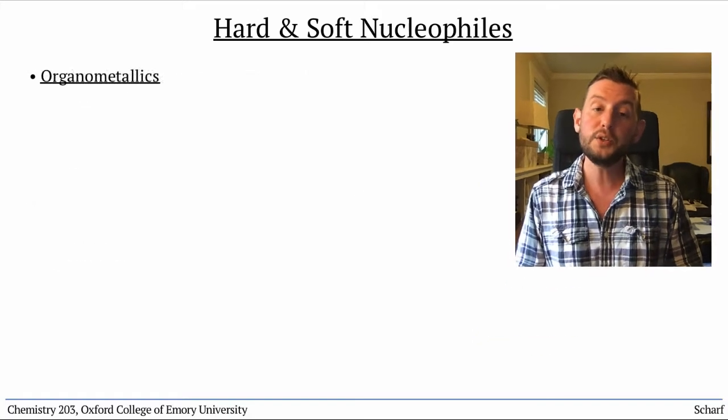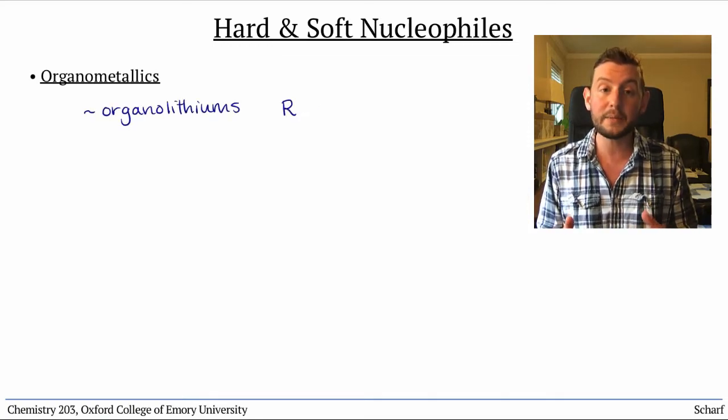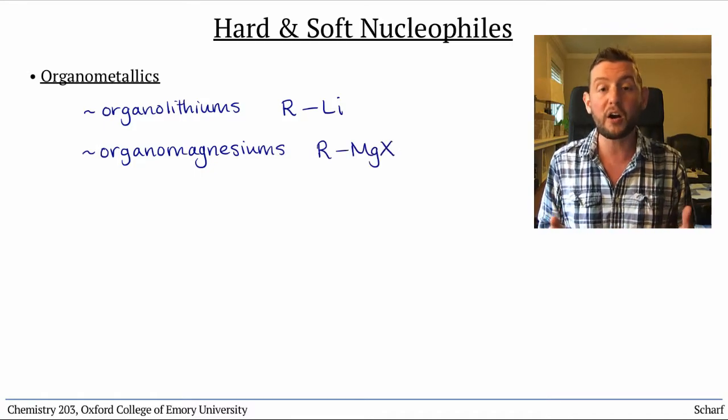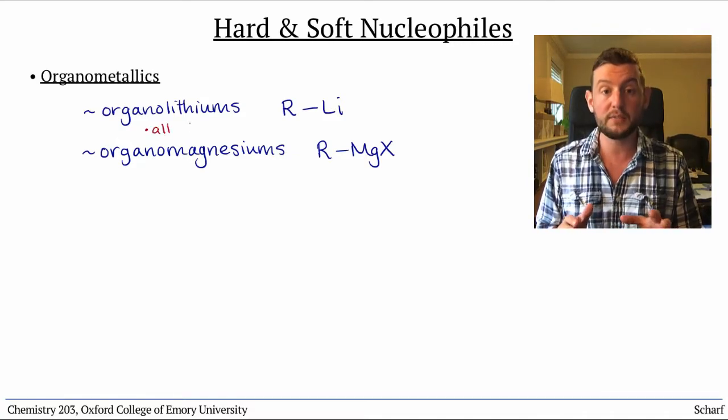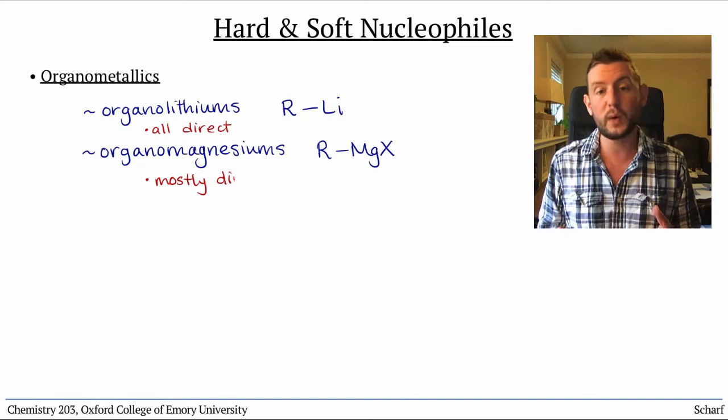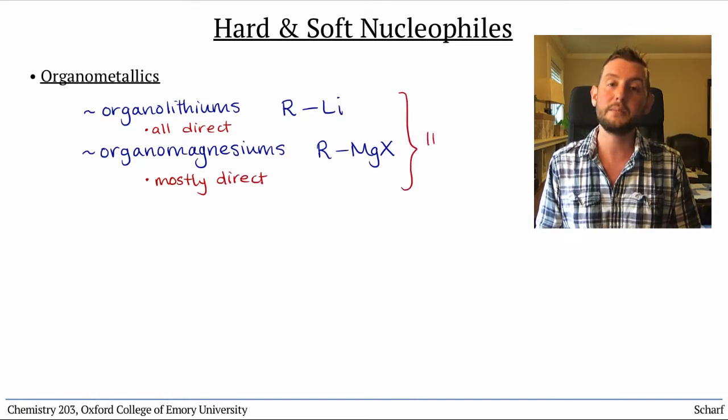The two types of organometallic reagents we've encountered so far, organolithium and organomagnesium reagents, are both pretty hard. Organolithium reagents exclusively give direct addition, and Grignard reagents usually do as well, though with substantially less selectivity than their lithium counterparts.